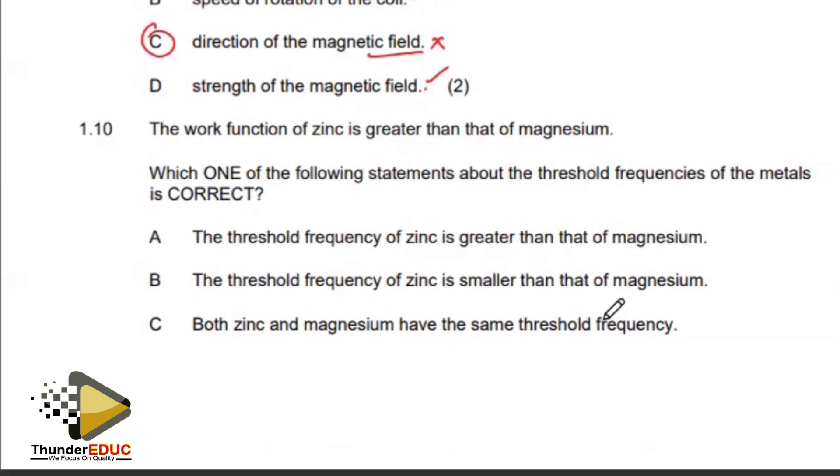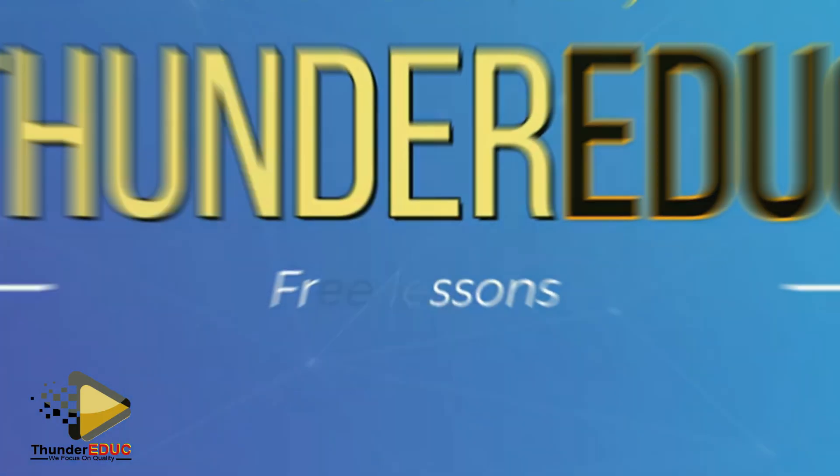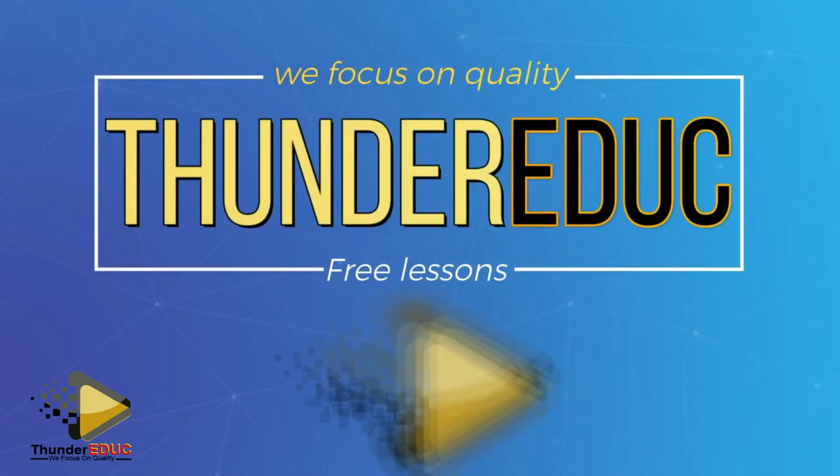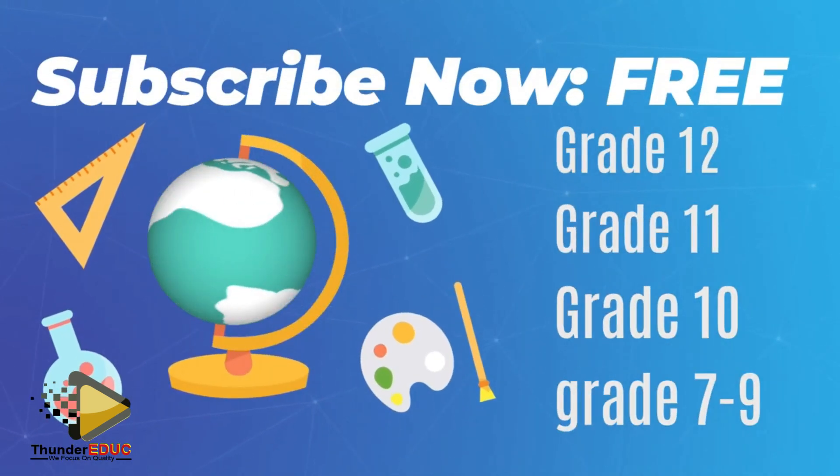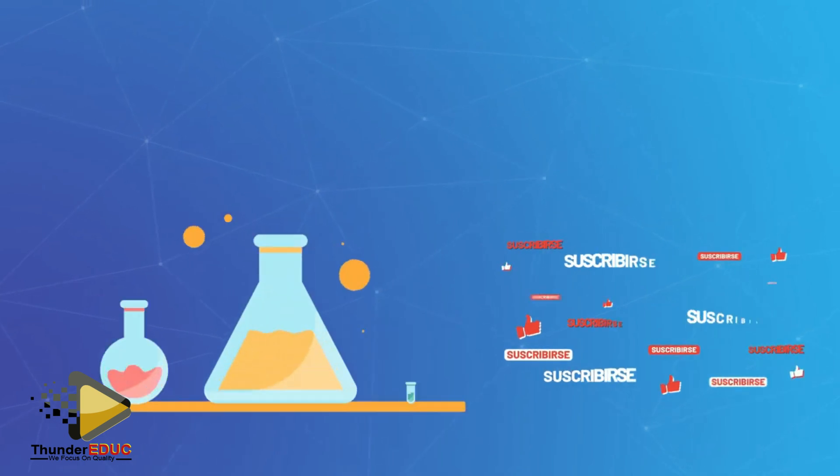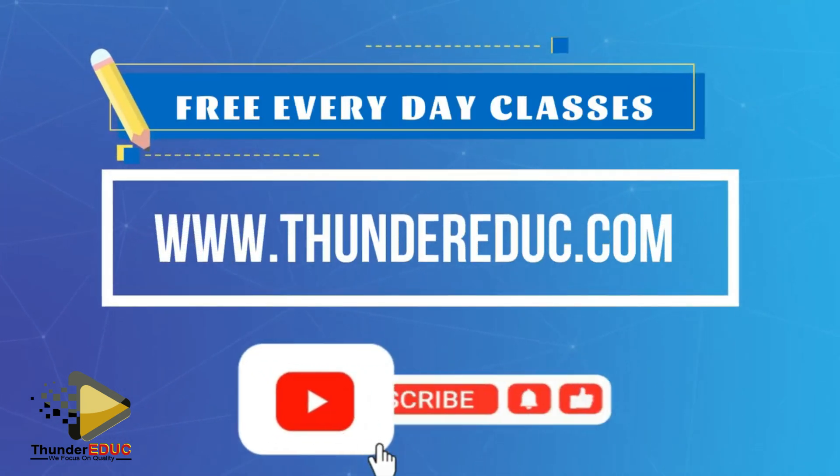Then 1.10: The work function of zinc is greater than that of magnesium. Which of the following statements about threshold frequencies is correct? Remember threshold frequency is just the minimum frequency needed to eject an electron from the metal surface. So the threshold of zinc is greater.